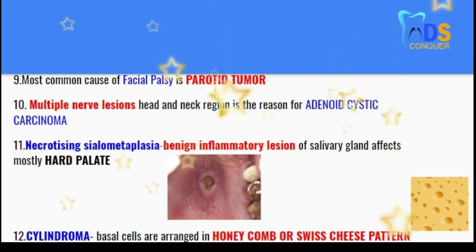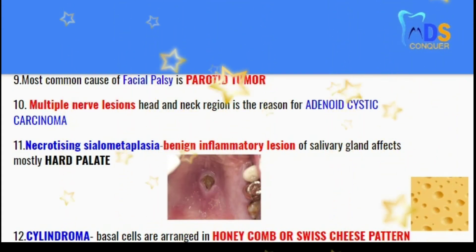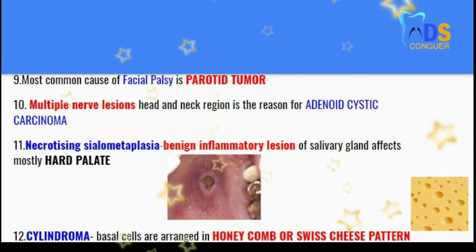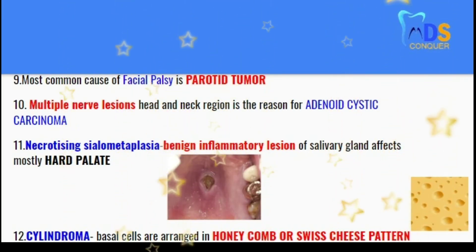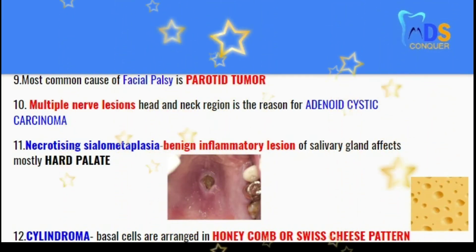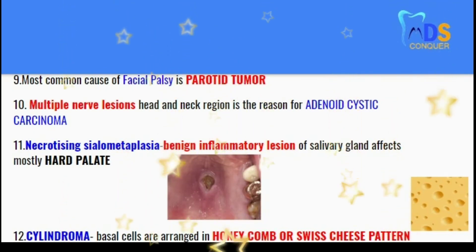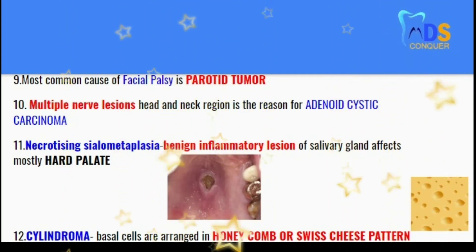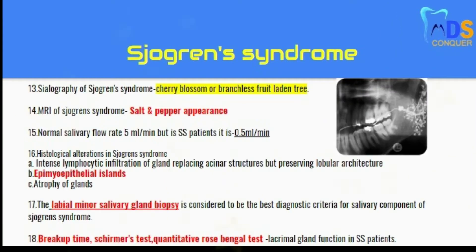Point 11: necrotizing sialometaplasia is a benign inflammatory lesion of the salivary gland that affects mostly the hard palate region. Point 12: cylindroma or adenoid cystic carcinoma contains basal cells arranged in a honeycomb or Swiss cheese pattern.